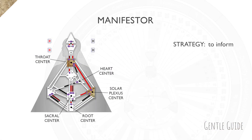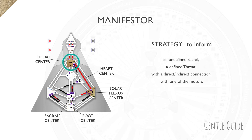Let's take a look at the Manifestor — strategy: to inform. This is an example of a Manifestor chart. The way you recognize their chart is they have an undefined sacral, a defined throat, with a direct or indirect connection between throat and one of the other motors, which are root, solar plexus, and heart center.